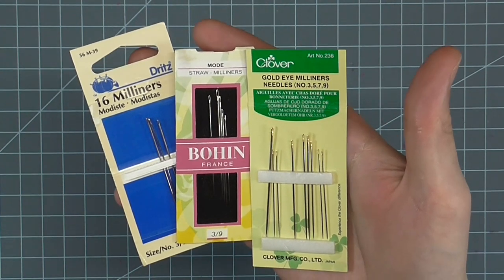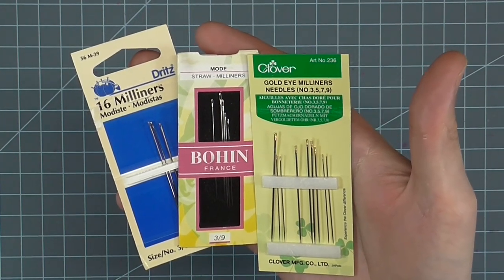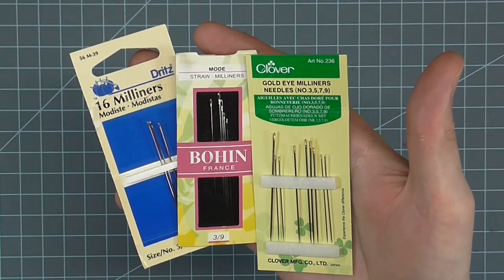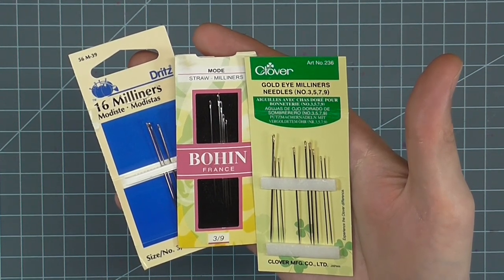Milliner's needles are much longer. You can usually get a variety of sizes in one package. I mainly use size 9 needles, but it is going to depend on the thickness of your thread.